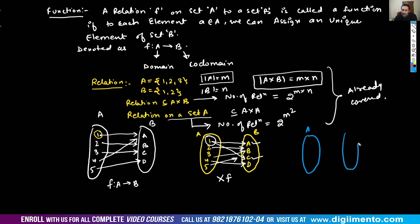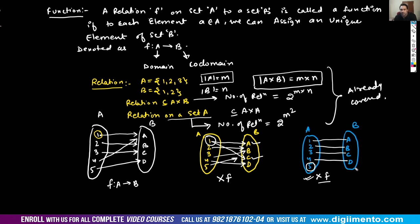Another example: if 1→a, 2→b, 3→c, 4→d, but 5 is not related to anyone, it is also not a function, because every element of A must be related to some unique element of B. Every element of A must have exactly one value in B.